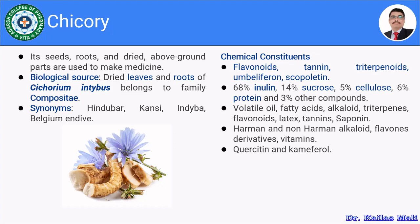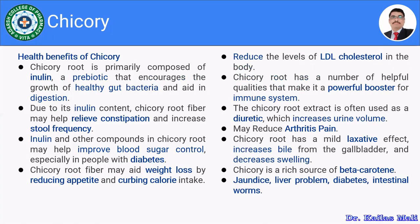On this slide, we have discussed the biological source of Cichorium, synonyms, and chemical constituents. Let us move towards the health benefits of Cichorium. As we know the phytoconstituents present in Cichorium, all these have a certain role in the management of certain diseases. The Cichorium root is primarily composed of inulin, which is a prebiotic that encourages the growth of healthy gut bacteria and supports digestion.